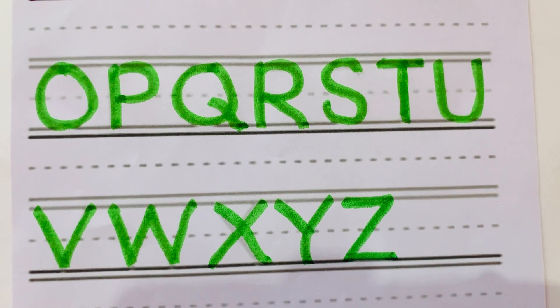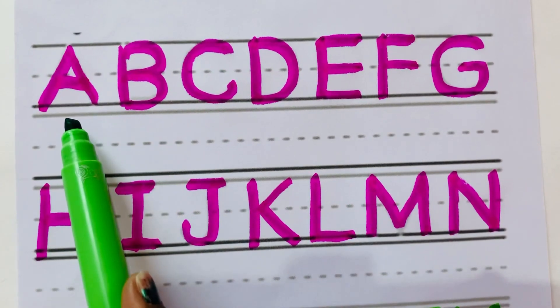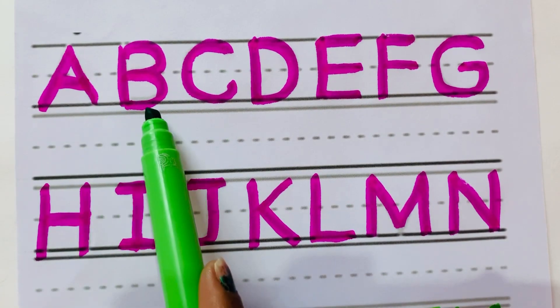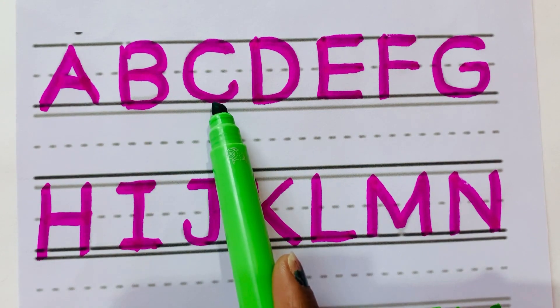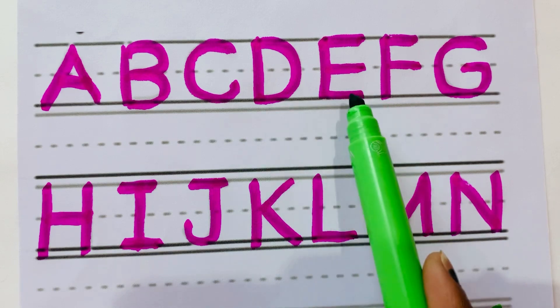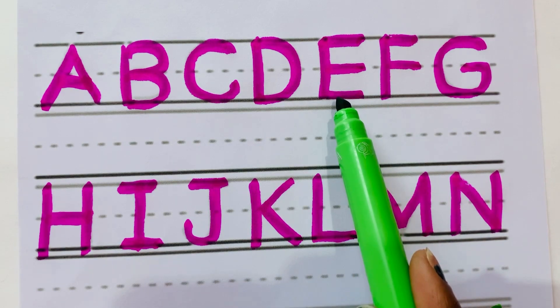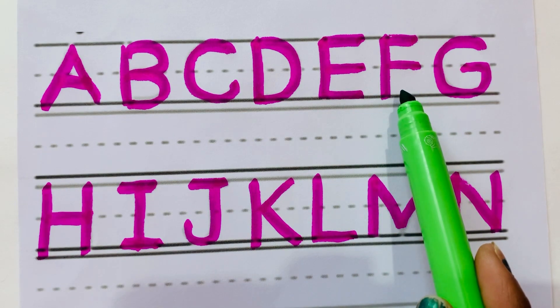Z. A for Apple, B for Banana, C for Candy, D for Diamond, E for Elephant, F for Fish.